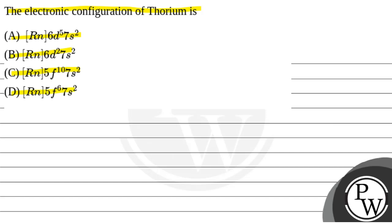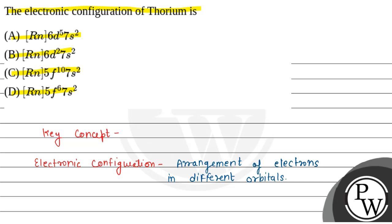So this question's main key concept is electronic configuration. Electronic configuration means the arrangement of electrons in different orbitals. That is electronic configuration - arrangement of electrons in different orbitals.